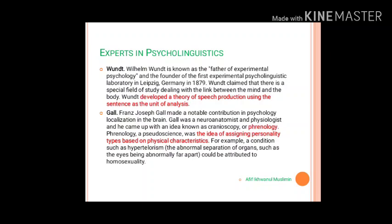Wundt developed a theory of speech production using the sentence as the unit of analysis. The second expert is Franz Joseph Gall, who created a theory of phrenology — the idea of assigning personality types based on physical characteristics. For example, a condition such as hypertelorism, or the abnormal separation of the eyes being abnormally far apart, was associated with certain personality traits.